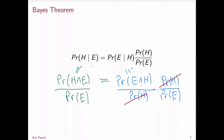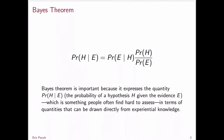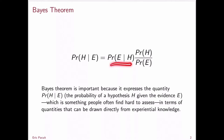This is just a general fact about probabilities and conditional probabilities, but it turns out to be incredibly useful. Bayes' theorem is important because it expresses the probability of H given E — typically the probability of a hypothesis H given some observed evidence E — which is hard to assess directly, in terms of quantities that can be drawn directly from experiential knowledge.